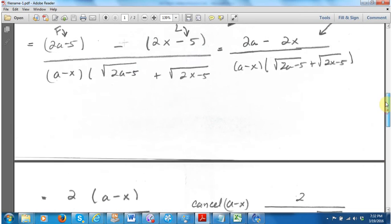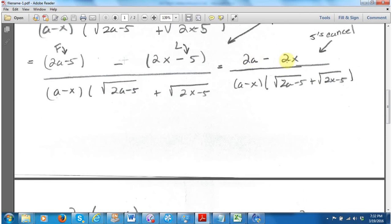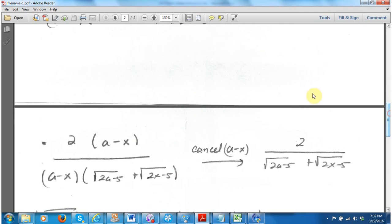Now I can factor this 2 from the 2a and the 2x. So I get the 2 to come out in front. And then I can cancel this a minus x on top and bottom. So I get this 2 over just this mess.